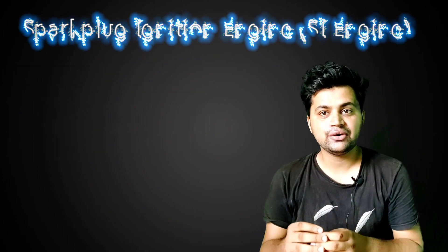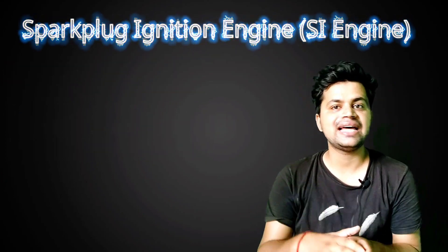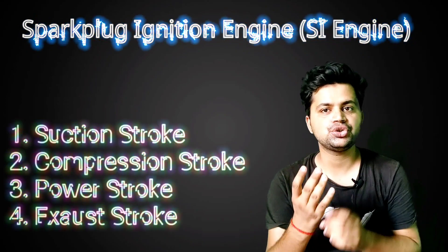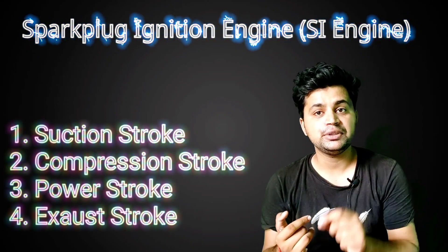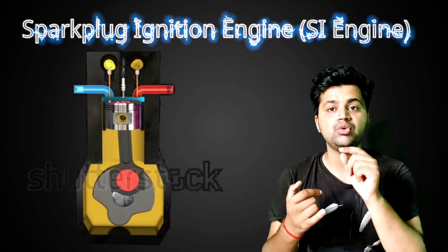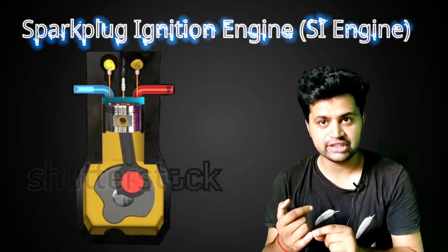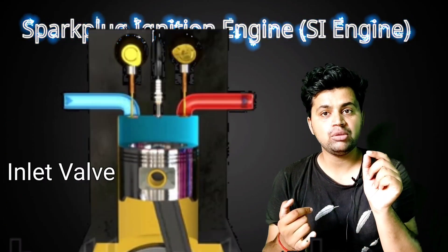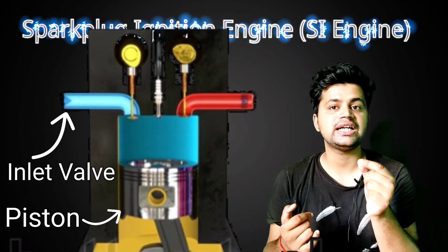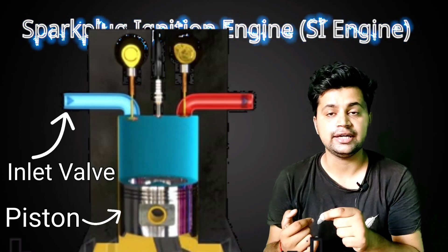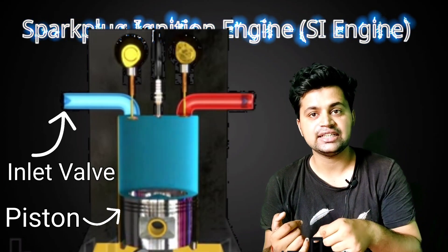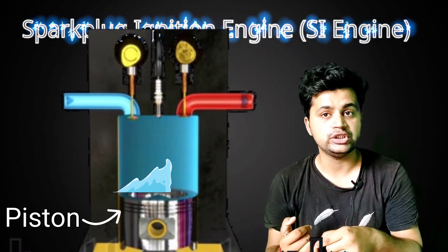Now, what is the SI engine? Whether it is an SI or CI engine, there are four strokes. In the first stroke, the piston moves from TDC to BDC — the inlet valve is open. The inlet valve is the valve where fuel enters the cylinder. So the air and fuel mixture comes into the cylinder while the inlet valve is open.